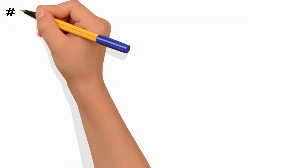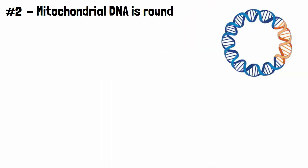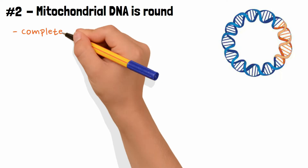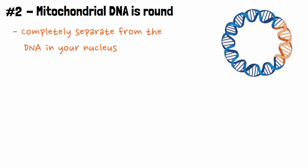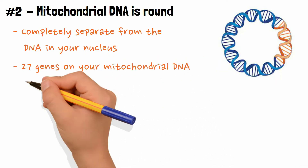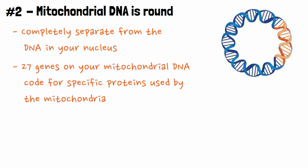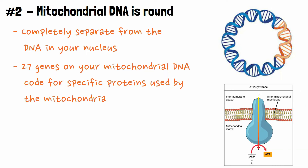Fun fact number two. Mitochondrial DNA is round, not linear like the DNA in your nucleus. And it is completely separate from the DNA in your nucleus — they never interact. The 27 genes on your mitochondrial DNA code for specific proteins used by the mitochondria, such as ATP synthase.